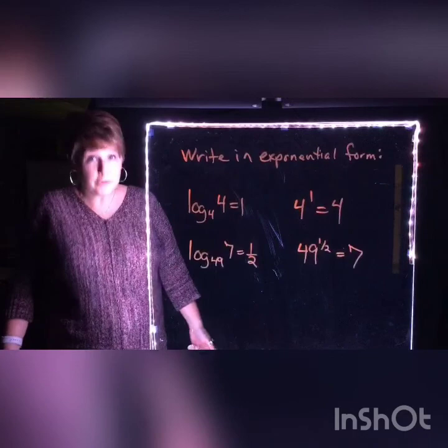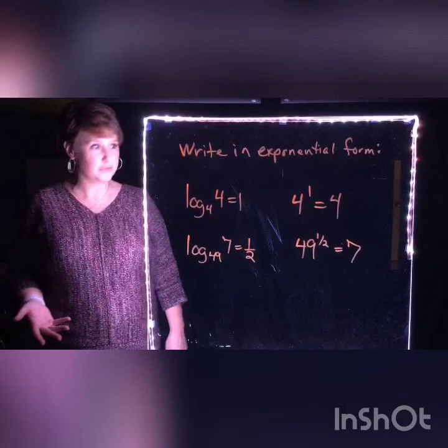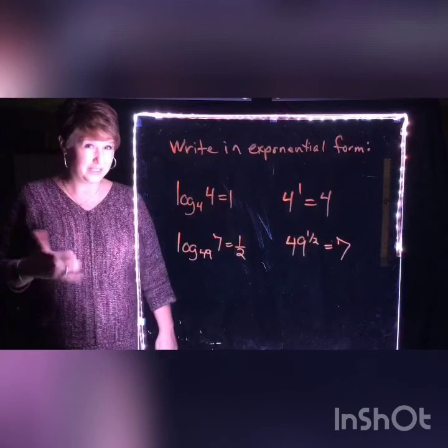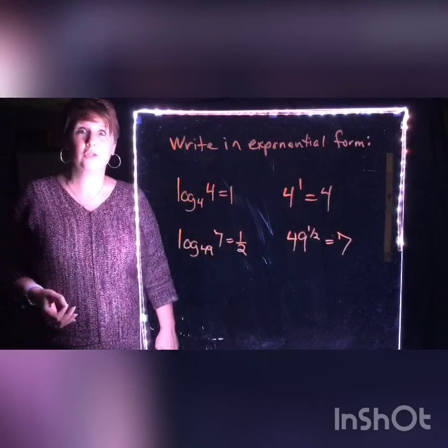How did you do? 4 to the first power equals 4. That does make a ton of sense. The base was 4, the answer was 4 — so 1 has to be the exponent. It's the only number that's going to work if you have a base of 4 and you'd like your answer to be 4. The second one brings us back to last week: 49 to the 1/2 power. Do you remember what that is? You really should remember.